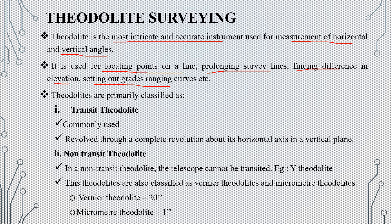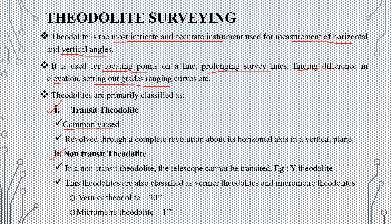Theodolites are of two types: transit theodolite and non-transit theodolite. The transit theodolite is common to use on site. The transit theodolite has a complete horizontal axis and will revolve in the vertical axis.